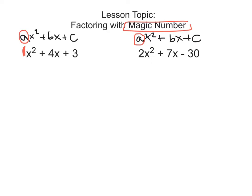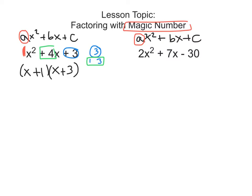The one on the left we're going to factor the way we've already done in class. So the first thing we do is we take this 3 out here and we say, what two numbers multiply together to give me 3? Well, 1 times 3, or negative 1 times negative 3. We want to get this number when we add the factors. So we look for the factors that when we add them we get positive 4. Well, 1 plus 3 is 4. So we put our parentheses down and then we put x in the front of each parentheses because x times x is x squared. And those values are positive 1 and positive 3.